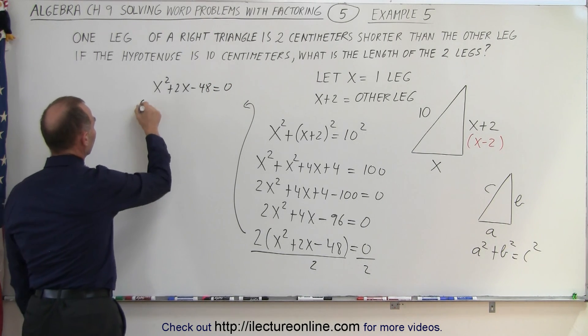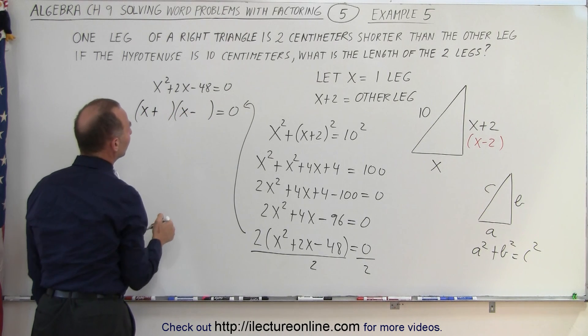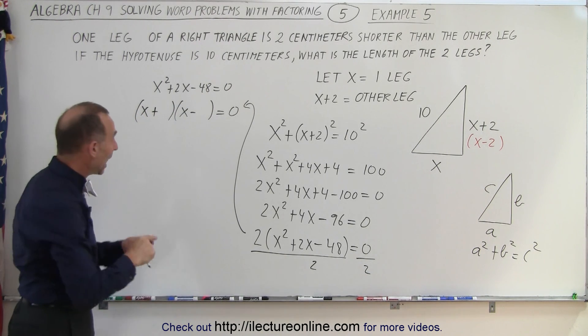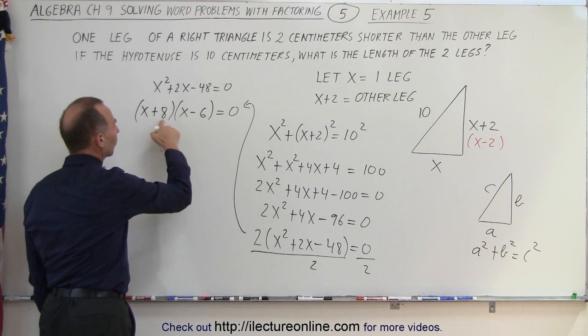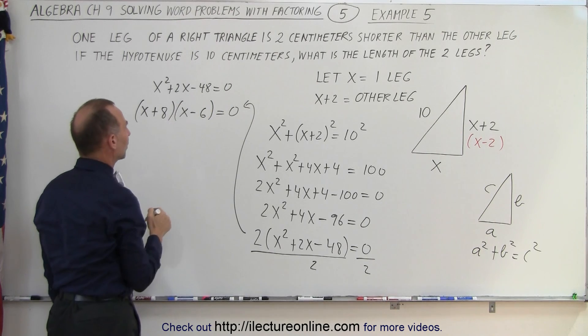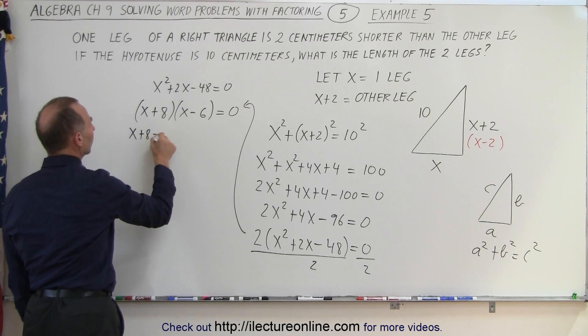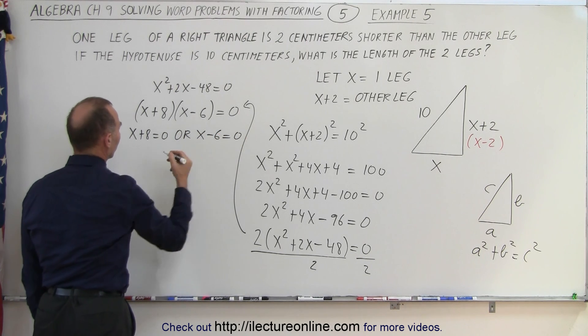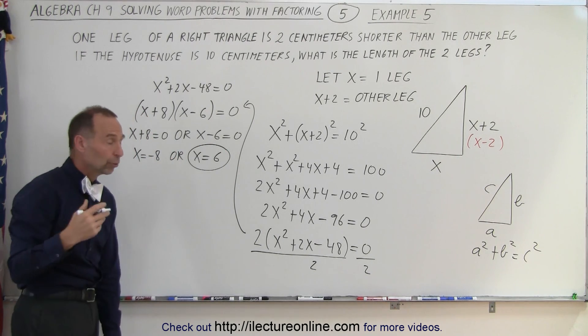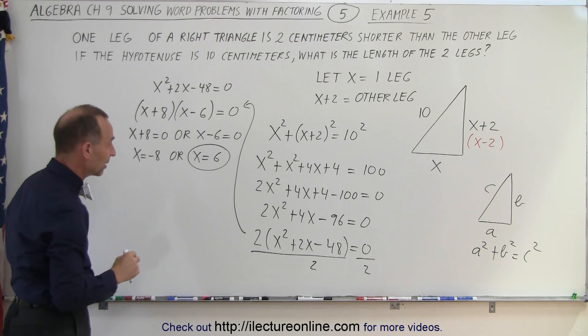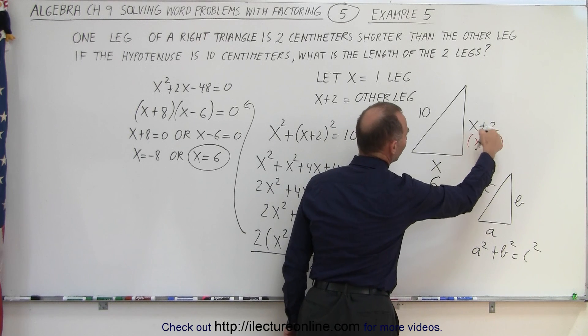Now we're ready to factor that. When we factor, we get (x + 8)(x - 6). To get this we need an x and an x. The signs need to be plus and minus because otherwise when we multiply we can't get minus 48, and when we add them we get 2x. That means we need a plus 8 and a minus 6: 8 minus 6 is 2, and plus 8 times minus 6 is minus 48. Since we have two binomials multiplied together giving us zero, that means either x plus 8 equals zero or x minus 6 equals zero, which means x equals negative 8 or x equals 6. Now x equals 6 is the only possible solution because we can't get a negative length for the side of a triangle. So x equals 6 is the correct solution, which means this side equals 6 and this is 6 plus 2 equals 8.